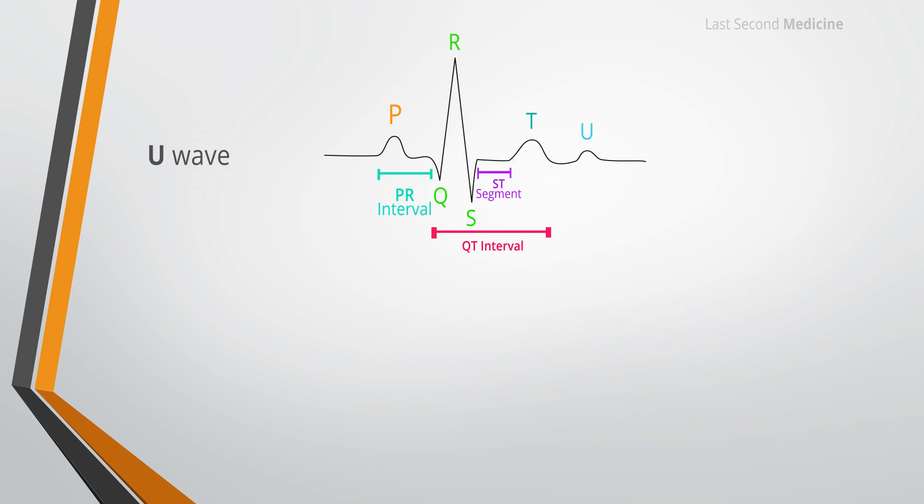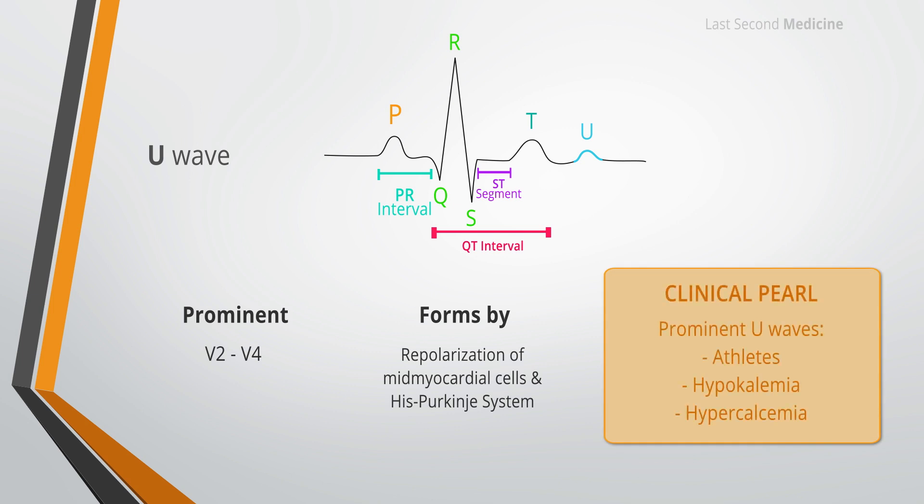Now coming on to discussion of the U wave. The U wave is a small deflection that follows the T wave. It is generally upright except in lead AVR and is often most prominent in lead V2 to V4. U waves result from the repolarization of the mid-myocardial cells and the His-Purkinje system. Many electrocardiograms have no discernible U waves. Prominent U waves may be found in athletes and are also associated with hypokalemia and hypercalcemia.